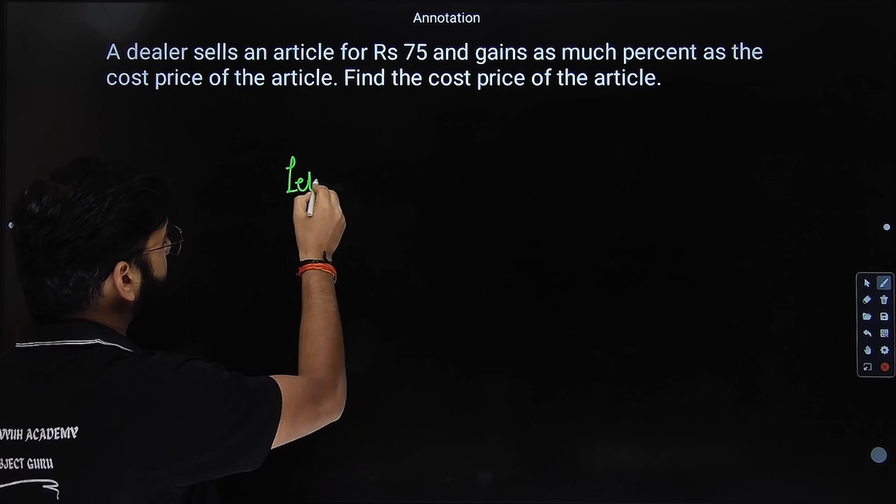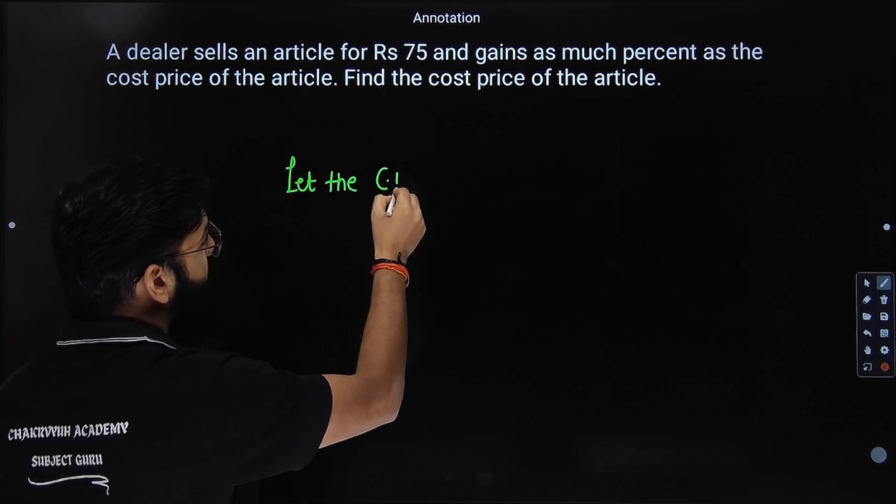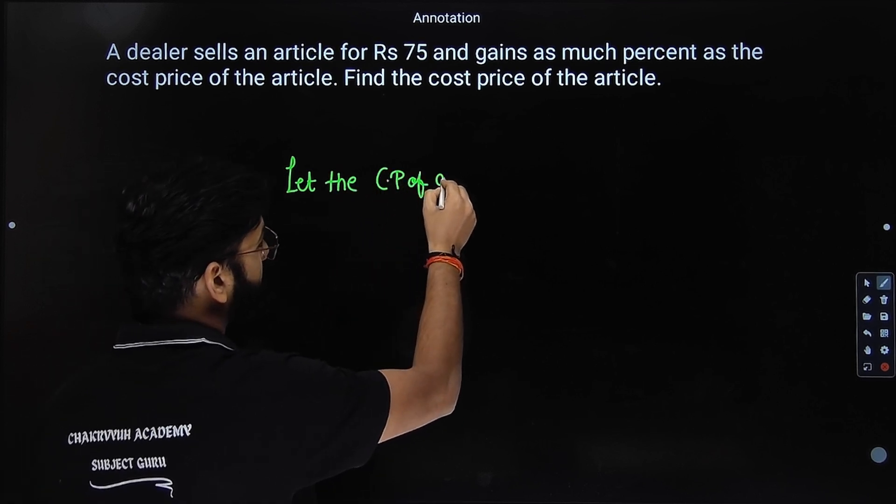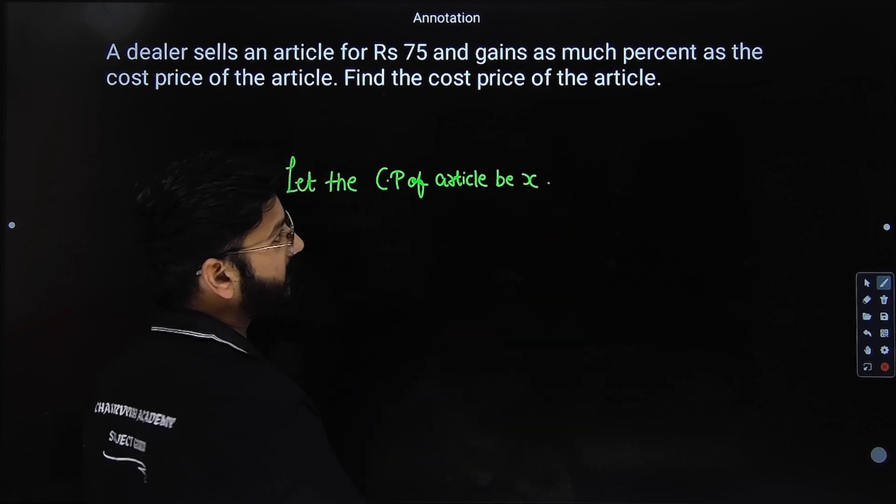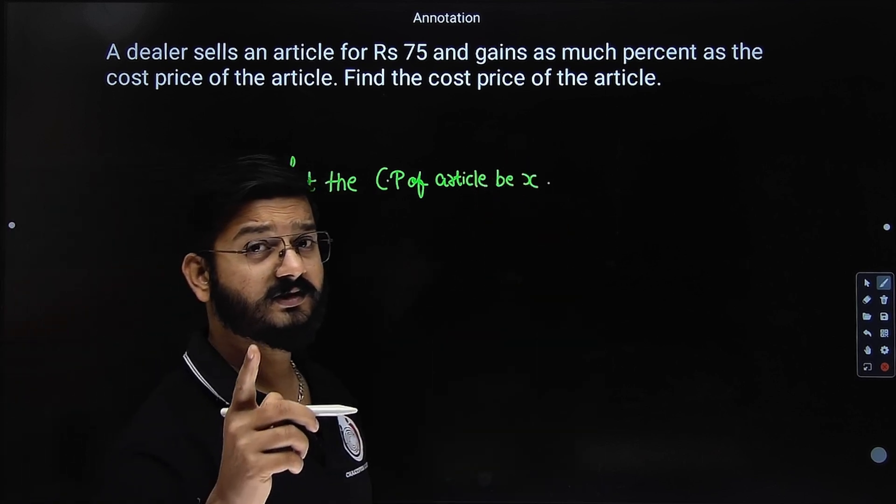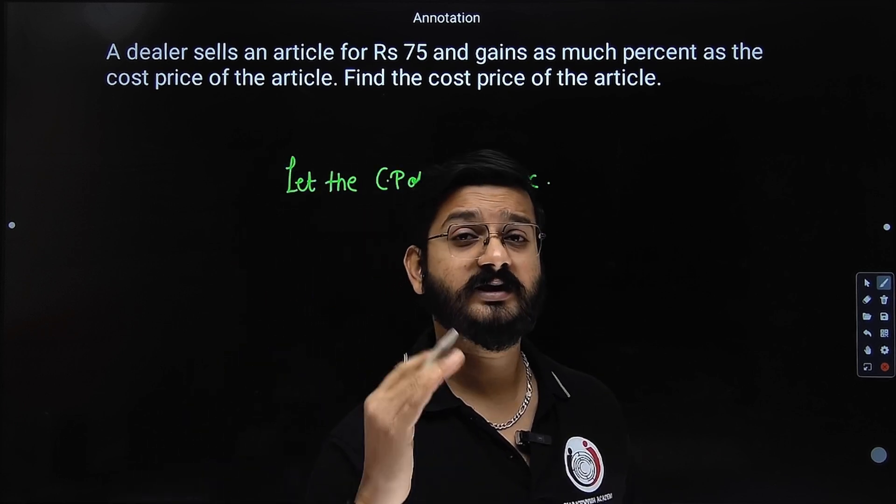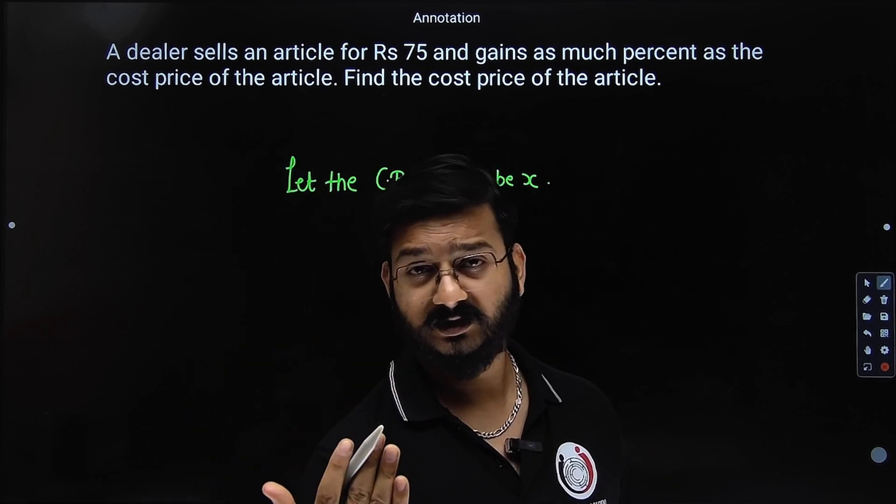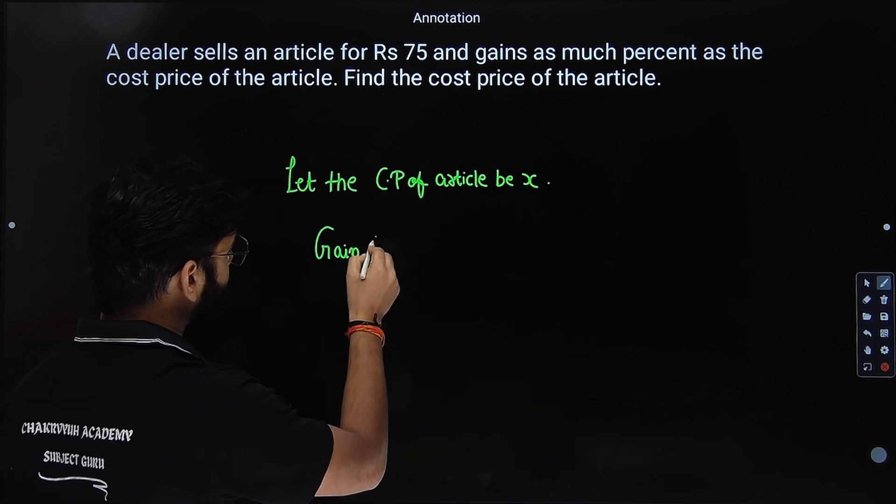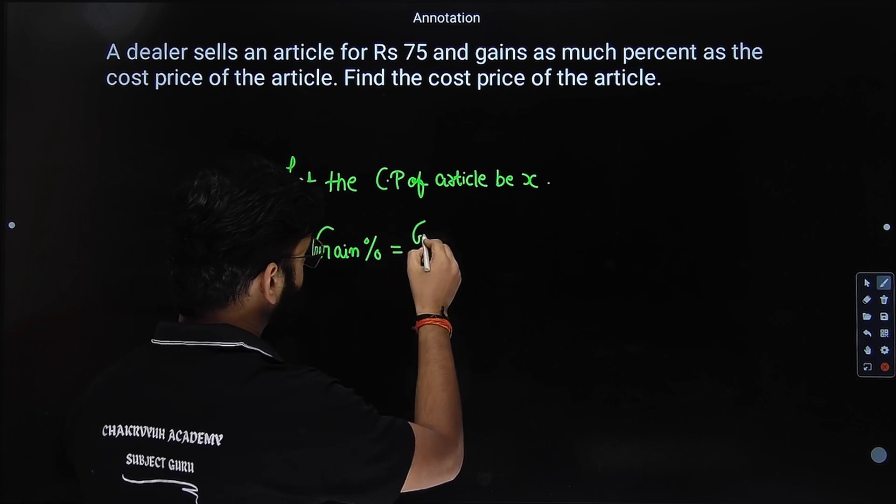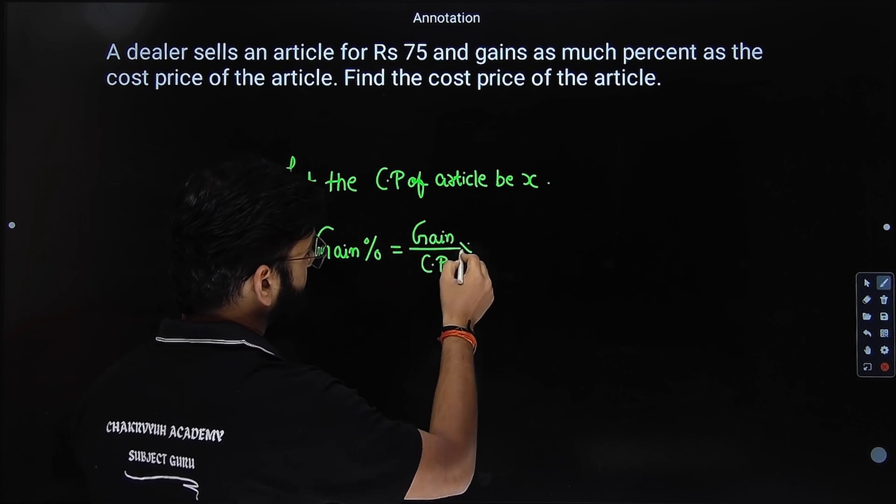So let us assume that the cost price of the article is x rupees. What is the formula for the gain percentage or profit percent? See, profit or loss always happens with respect to cost price. So the formula for gain percentage is gain by CP into 100.